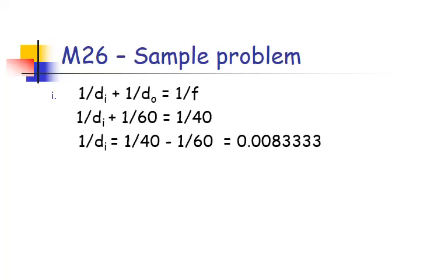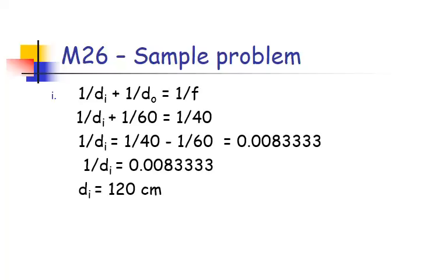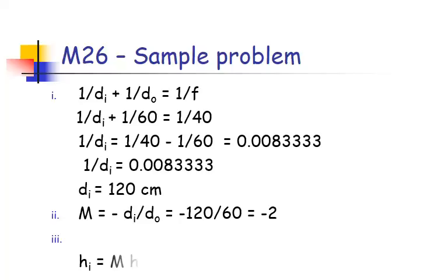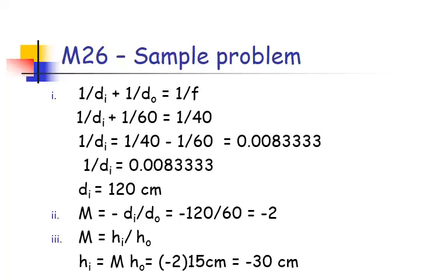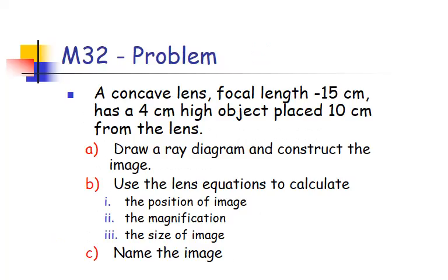For our image distance, we should get 120 centimeters, and then for magnification, negative 2 — so twice as big and inverted. And then our height should be negative 30.